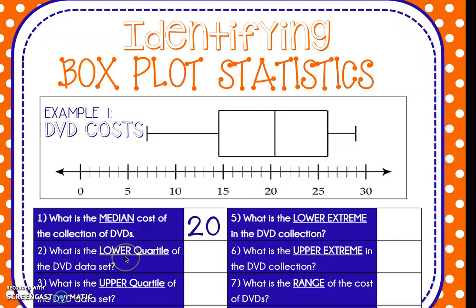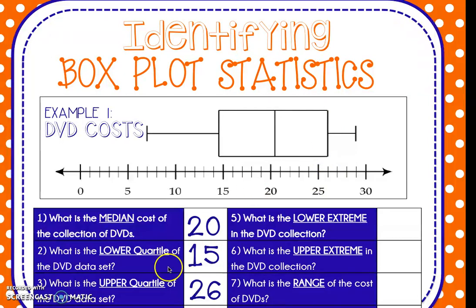Our lower quartile is easy to identify — our lower quartile is at 15. Our upper quartile, if we go to the other side, is at the 26 mark. Now you can't see it on my screen because it got cut off, but number four asks you for the interquartile range. We learned yesterday that to calculate interquartile range, we subtract the lower quartile from the upper quartile. The box plot shows us what those are, so we just do 26 minus 15 and we get an interquartile range of 11.